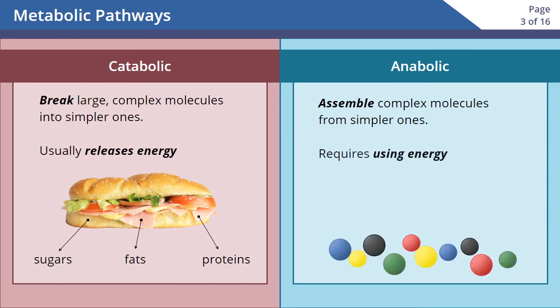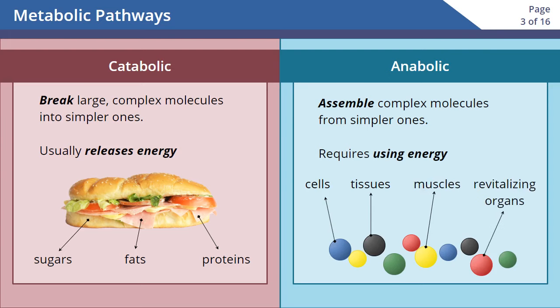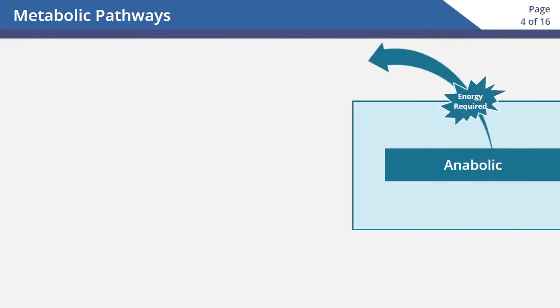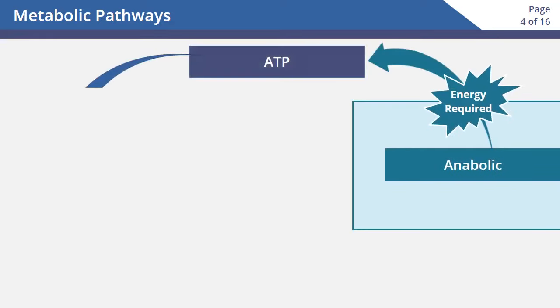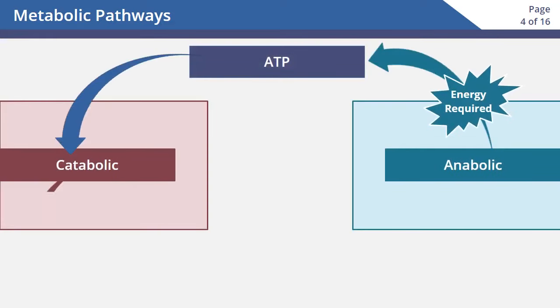Anabolic reactions assemble complex molecules from simpler ones. This process requires using energy. Forming new cells, tissues, muscles, and revitalizing organs from the food you eat are all anabolic processes.